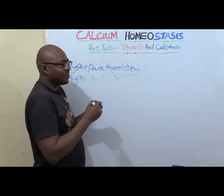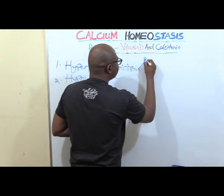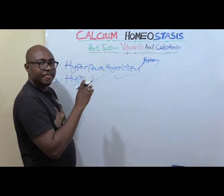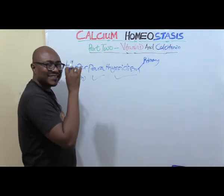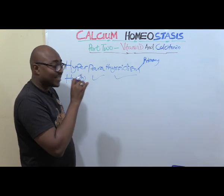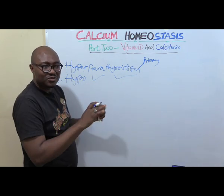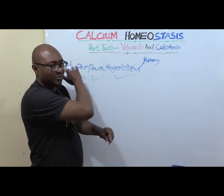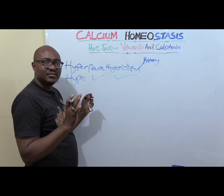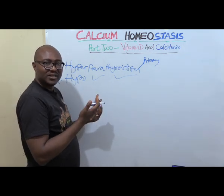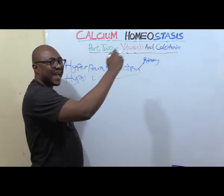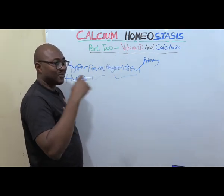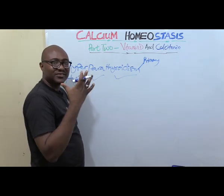Primary hyperparathyroidism means there is usually a tumor that is secreting excess parathyroid hormone. Excess PTH is secreted regardless of whether calcium levels are normal, because the tumor overrides the negative feedback mechanism. So what results is hypercalcemia — high blood calcium due to excess parathyroid hormone secretion.